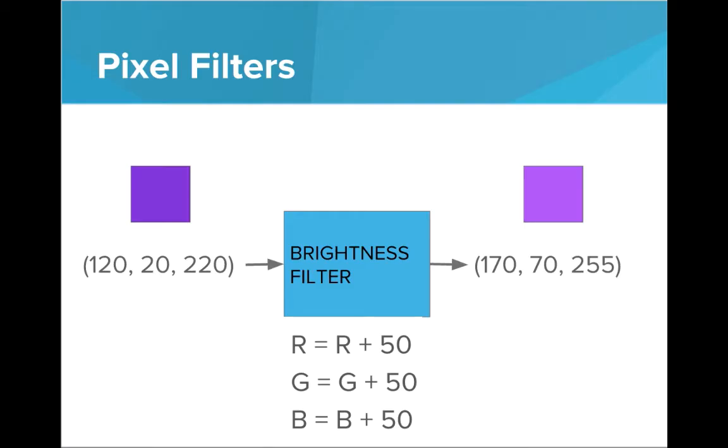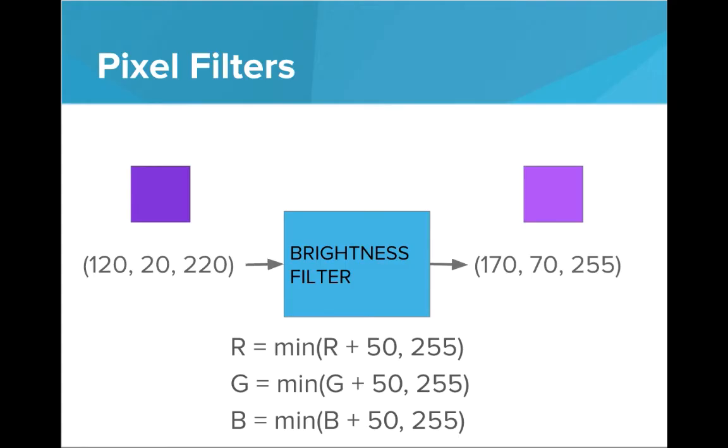Now there is one catch here. Since each channel cannot go above 255, we'll need to make sure that if any of these values go above 255, we chop it and cap it at 255. So we'll just use math.min. We'll take the minimum between 255 and adding 50 to the current value. And we see that here, the blue channel. Adding 50 should result in 270, but since 270 is too high, we'll cap it at 255.